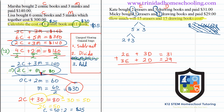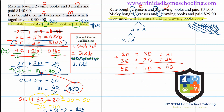We're going to add these two equations together. Notice we're not doing any subtraction or division at all — following steps blindly without critical thinking will cause trouble. So: 2E + 3E = 5 erasers, 3D + 2D = 5 drawing books, and $31 + $29 = $60. So 5 erasers and 5 drawing books cost $60.